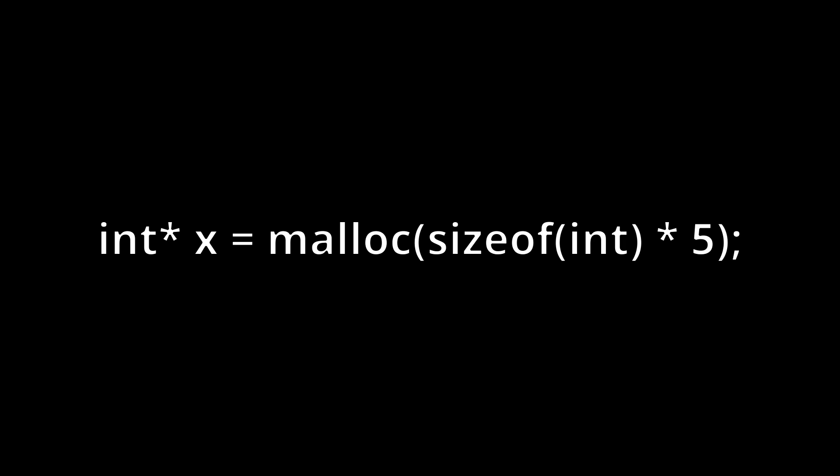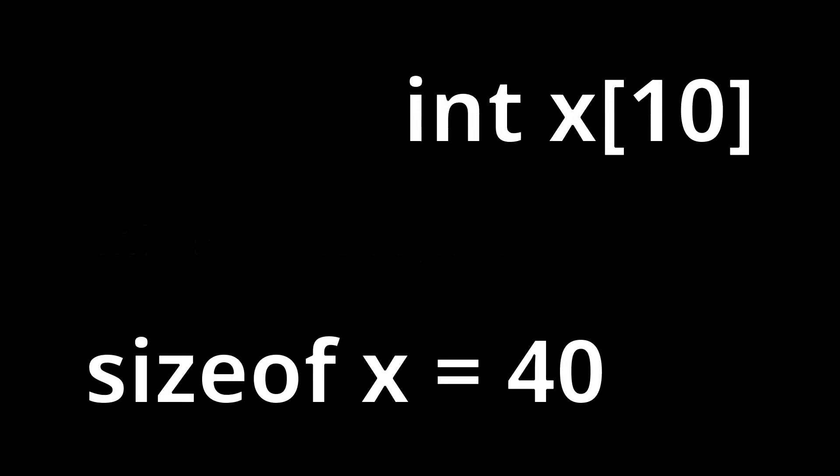We can also use this trick to get the number of elements in an array. So for example, if we declare an array and run the size of operator, we will get 40, assuming our compiler uses 4 bytes for our integers.